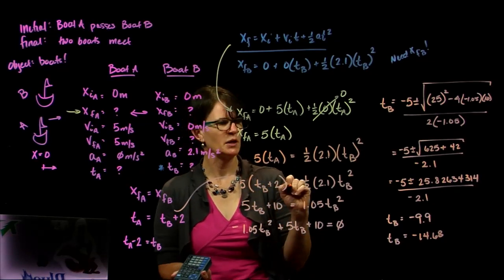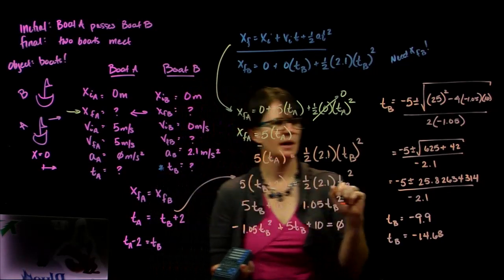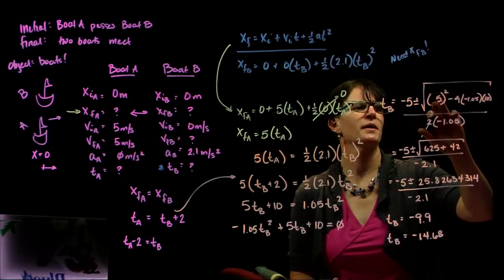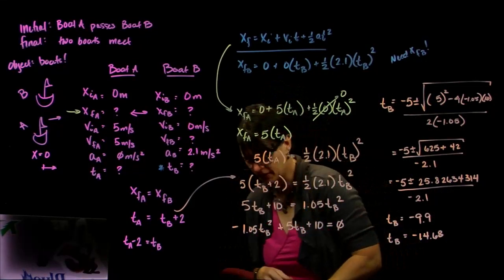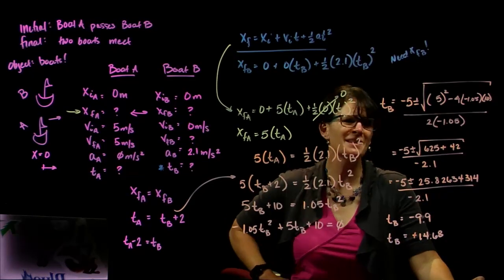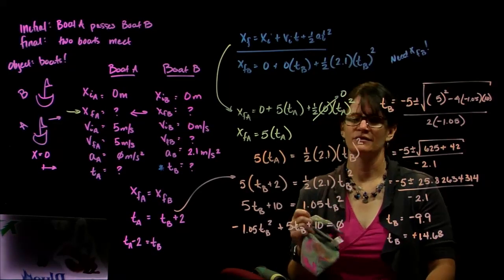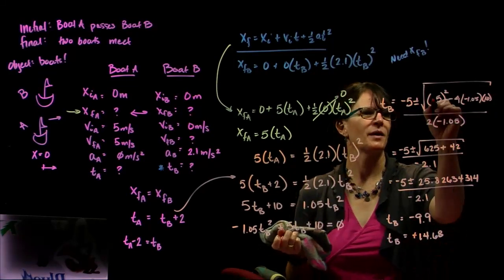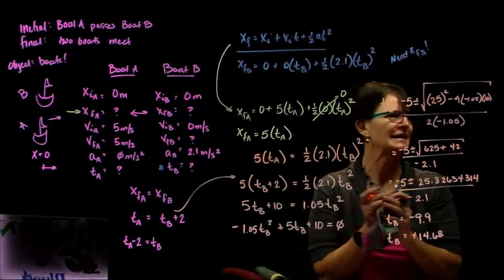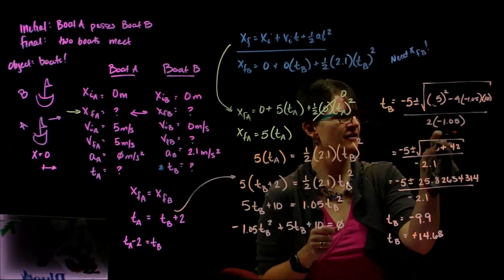I definitely made a calculation error. In the quadratic formula I wrote b², then squared it again, so I used 625 instead of 25. That's where the mistake was. This is a great example of evaluating your work — I looked at the answer and thought, that doesn't make sense, it's much higher than expected. Always evaluate at the end.